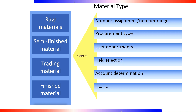Material type: the material type and industry sector are two key attributes of a material in the material master record, as they determine the way the material is managed and processed by the system. The material type controls number assignment or number range, external or internal number range, procurement type such as external, internal, or both, selection of views or user departments, field selections, and account determination.